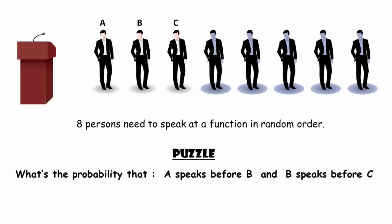So, we are interested only in the order of A, B and C. We don't care about the order of the other five persons.